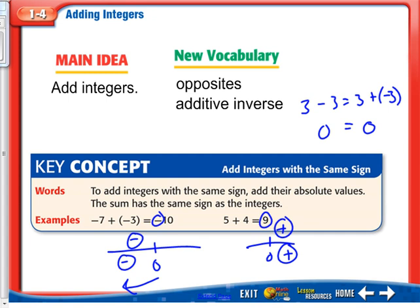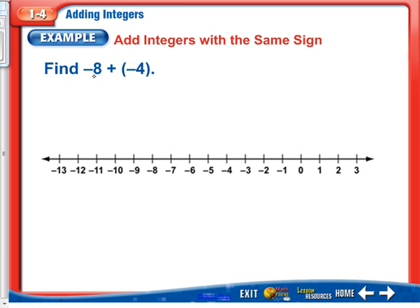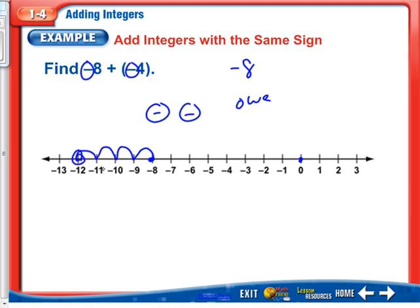If you're adding two integers with the same sign, you're going to keep that sign. So here we have a negative and a negative. We're going to add negative and another negative, so we'll end up with a negative. We start at 0. I like to talk about money — whenever I see a negative, I say 'owe.' So this says I owe $8, which puts me here. Then I owe four more dollars, going one, two, three, four. So I owe $12 altogether.